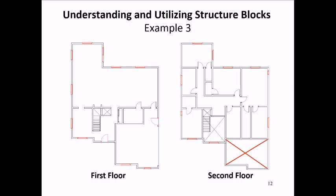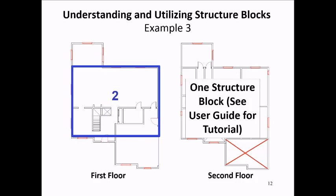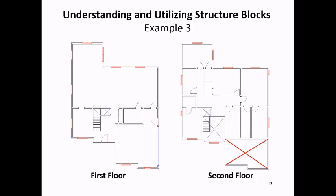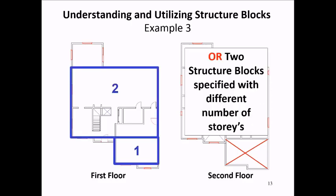This one is similar to our first example where the area over the garage is not continuous to the story above. Because all of the walls are offset inwards, you could utilize only one structure block to create the model — this technique is demonstrated in the user guide tutorials. Alternatively, since the area over the garage is not continuous to the story above, you could utilize two structure blocks: one specified as two stories for the main structure and one specified as one story. The choice is ultimately up to you, but the idea is that we don't want to utilize too many structure blocks to overcomplicate our model.